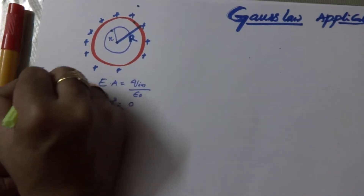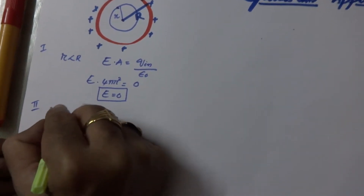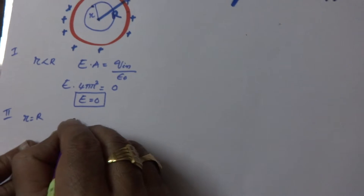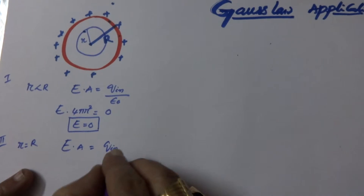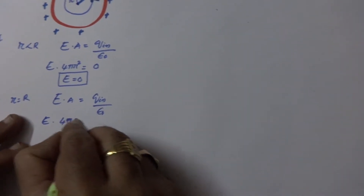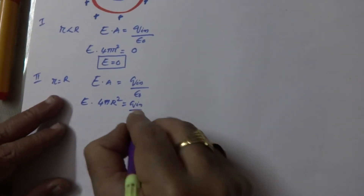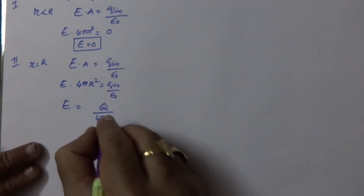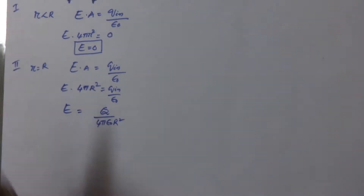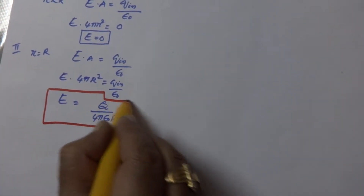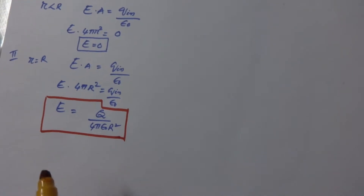Second case: when r is equal to R, that means our point of interest is on the circumference of the sphere. In this case, E·A is equal to Q_in by ε₀. So E into 4πR² is equal to Q_in by ε₀. Therefore E is equal to Q by 4πε₀R², since Q_in is the charge given on the shell, which is Q. This is the electric field on the circumference of the spherical shell.